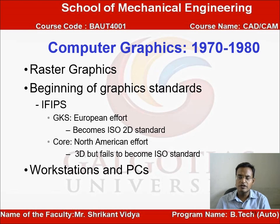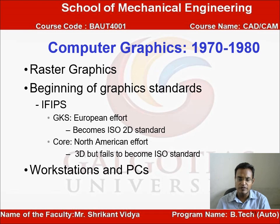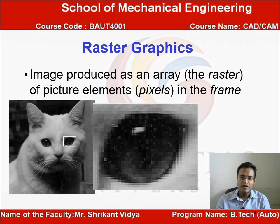From 1970 to 1980, raster graphics came into picture and the beginning of graphics standards emerged. There were two types: GKS, a European effort that became the ISO 2D standard, and PHIGS, a North American effort for 3D that failed to become the ISO standard. Workstations and PCs also came into picture. There are two types of graphics: raster graphics and random scan graphics.